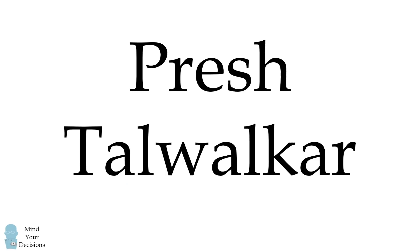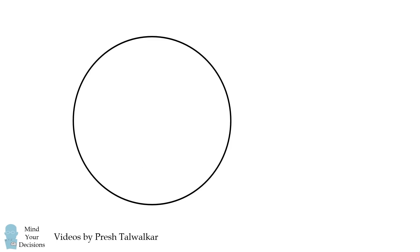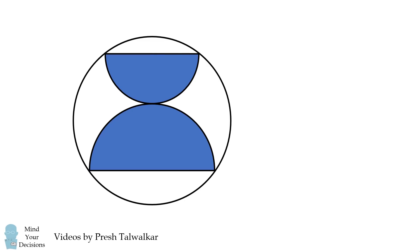Mind your decisions, I'm Presh Talwalkar. A circle contains two semicircles that are tangent to each other.